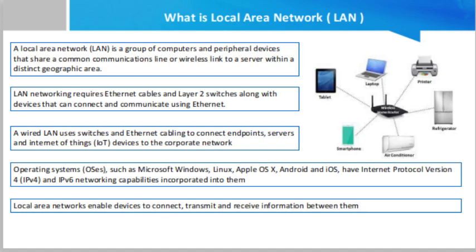Ethernet and Wi-Fi are the two primary ways to enable LAN connections. Ethernet is an IEEE specification that enables computers to communicate with each other. Wi-Fi uses radio waves in the 2.4 GHz and 5 GHz spectrum to connect computers to the LAN. Legacy LAN technologies including token ring, fiber distributed data interface (FDDI), and attached resource computer network have lost favor as Ethernet and Wi-Fi speeds increased and connectivity costs decreased.